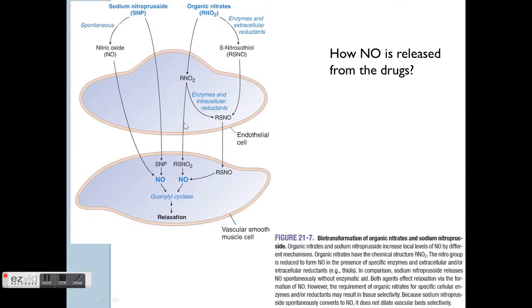So how do we get NO from the outside source, i.e., from the drugs? You can actually get it from two different sources, which is this sodium nitroprusside, which directly and spontaneously releases NO into the system. But the more commonly used drug is actually based on this organic nitrate family of the drugs.